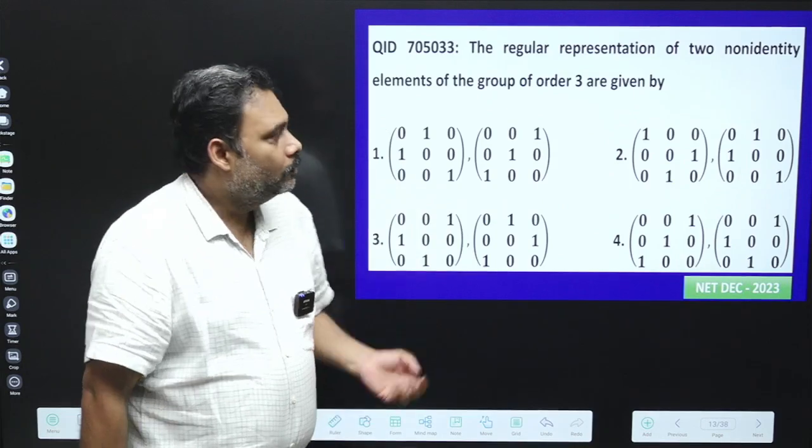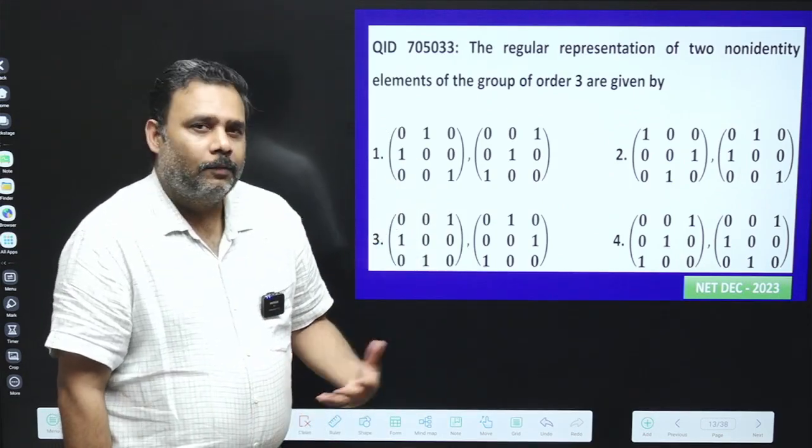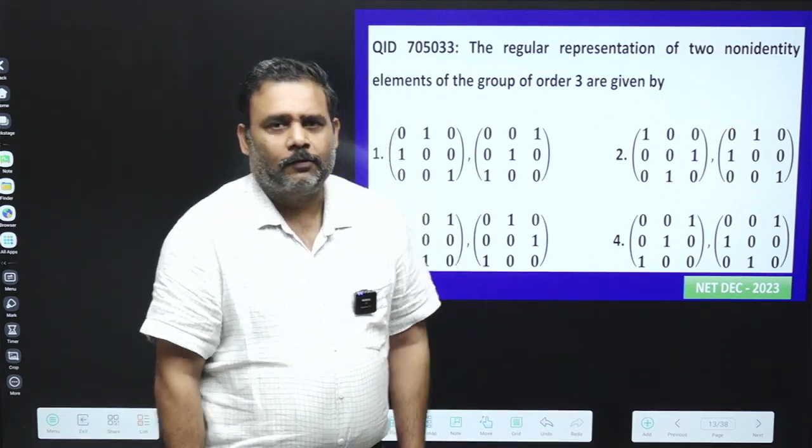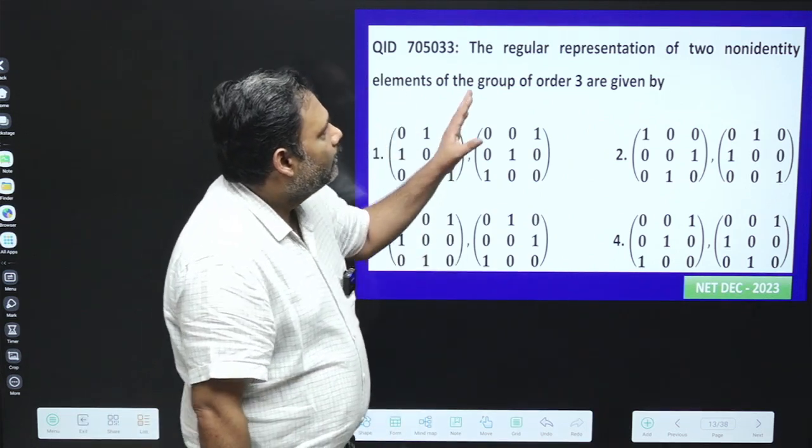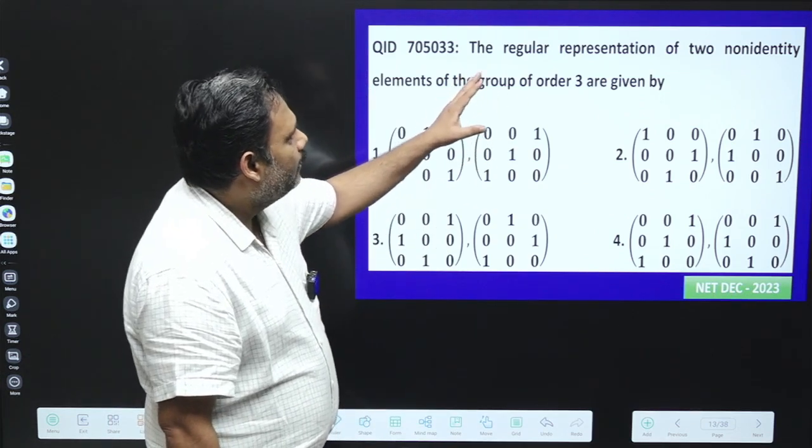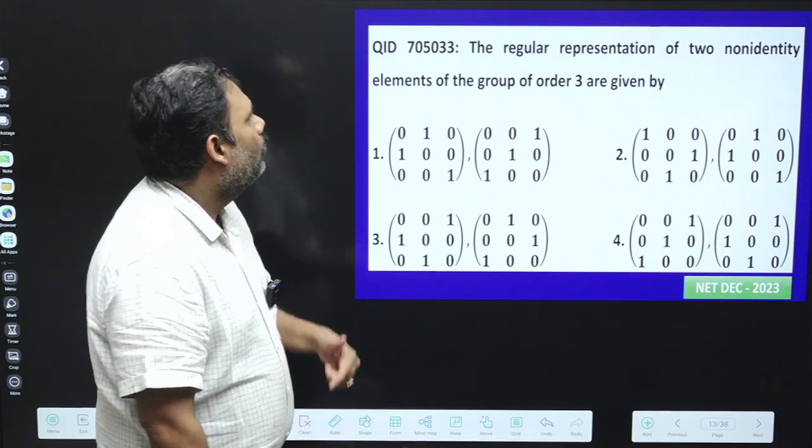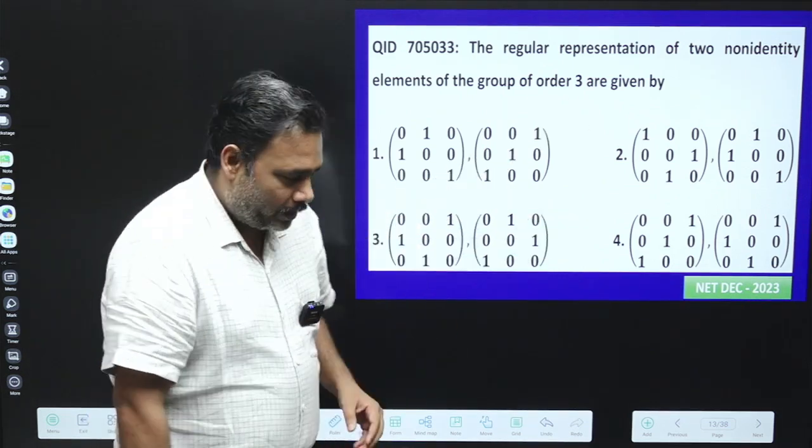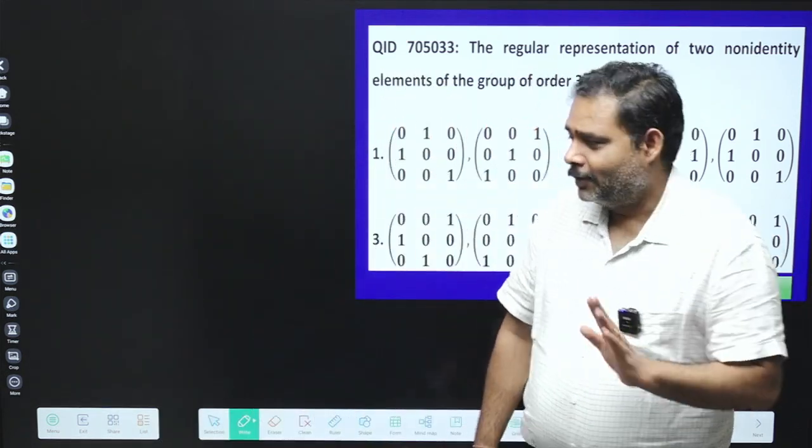Hello friends, so let's try to solve this problem. This problem is from group theory and this is a very simple and straightforward question. What is this question? This is given that the regular representation of two non-identity elements of group of order 3. So it's a very interesting and straightforward question.